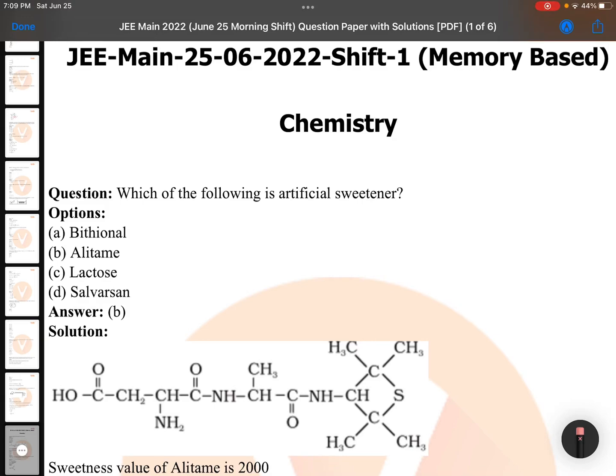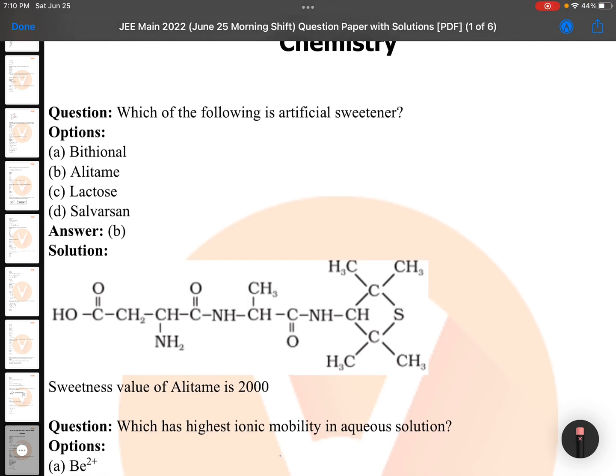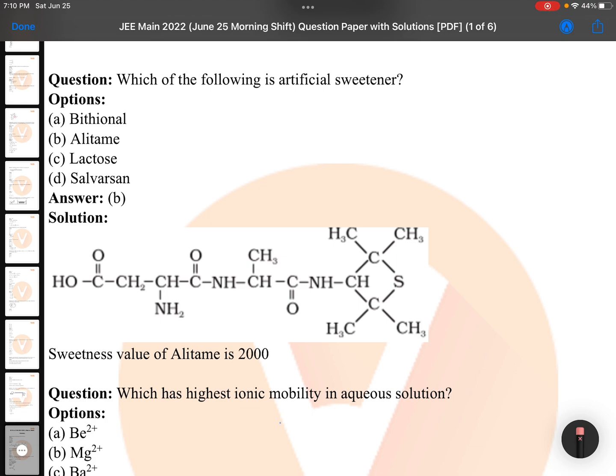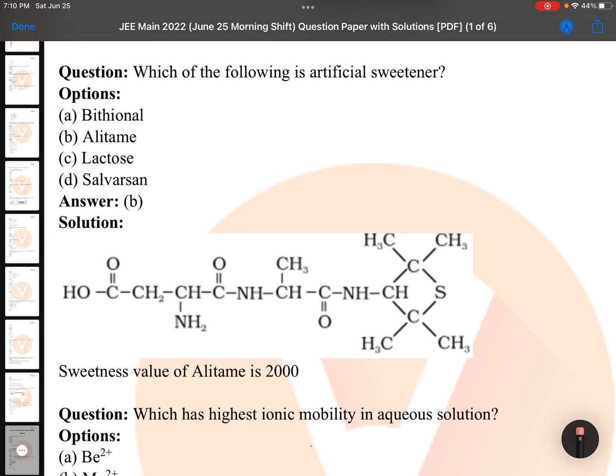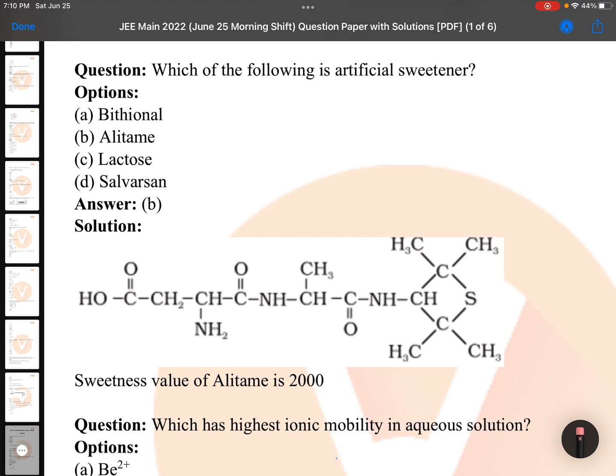Hi hello, this is your Lucky sir. 2022 JE Main chemistry series - we are seeing the third exam, 25th June shift one morning paper. I have just gone through the paper, it's an easy NCERT based paper. Thank you Vedantu for providing this question paper.